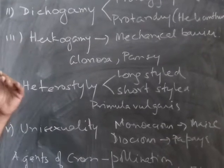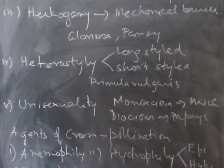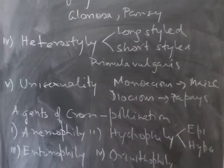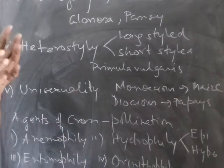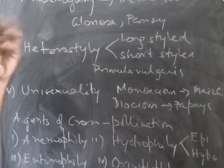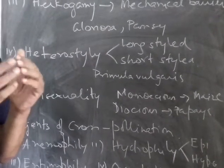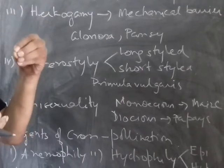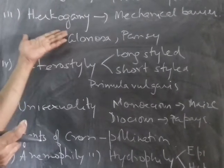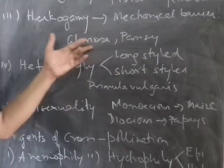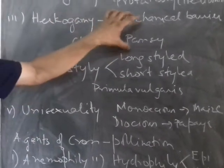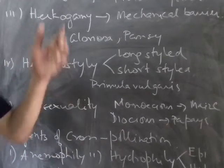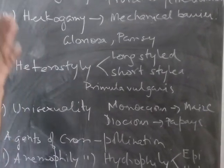Another contrivance is hercogamy, where there is a mechanical barrier between the anther and the stigma. This barrier prevents the pollen grain from dropping on the stigma. In pansy, there is a hood-like structure that does not allow the pollen grains to drop on the stigma. Gloriosa and pansy are examples of hercogamy, which also favors cross-pollination.